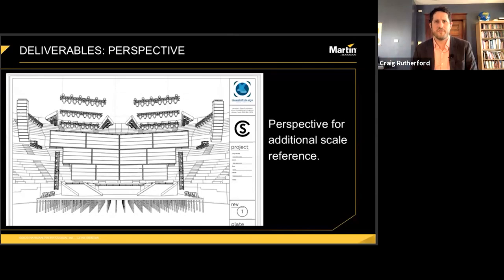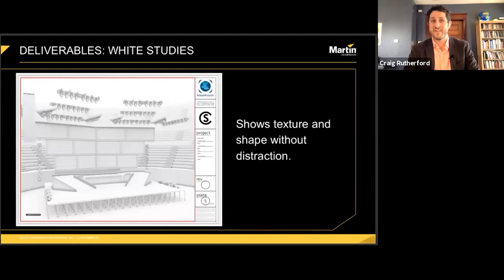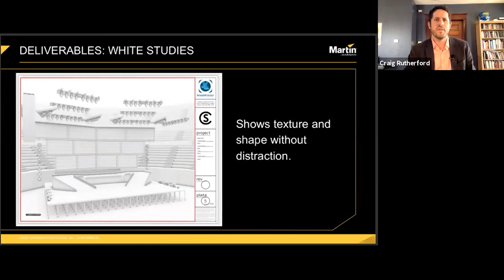For perspective views, I typically take things artistic and use one of the Vectorworks artistic styles to do what is essentially a hidden line renderer with some very pretty lines. The perspective view again helps convey a sense of scale. And then there are what I call 'white studies' or ambient occlusion renders — these show just shapes, just white, to show the form and texture of the set without any distraction of color or anything else.